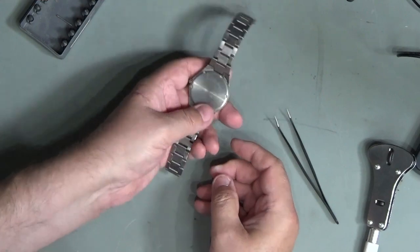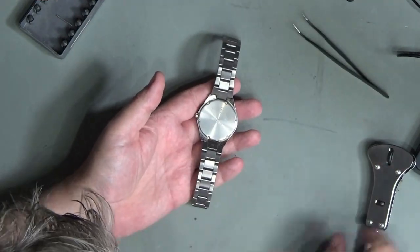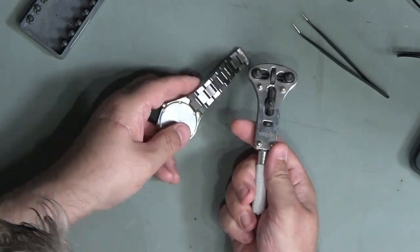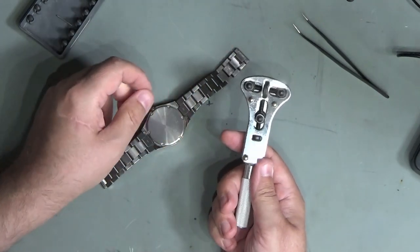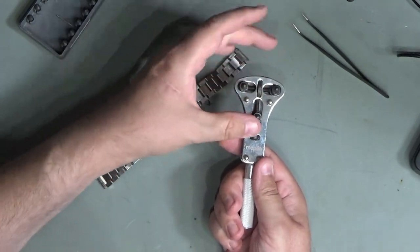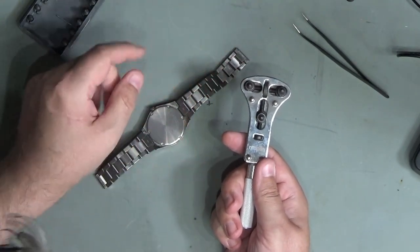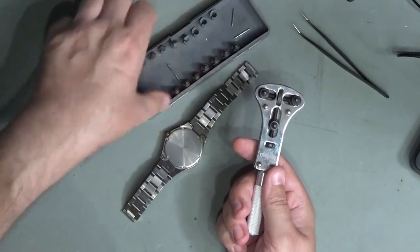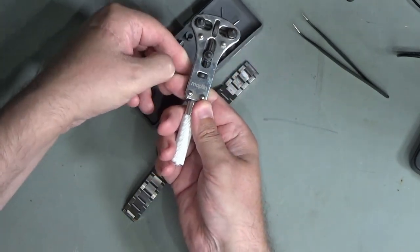Our next problem is we've got to get the back off this. For this I'm using this tool, this is a three-pronged tool and you can get two-pronged ones as well, but I like the three - it gives you a much more stable base. They come with sets like this, this is an old Maplin one in fact.